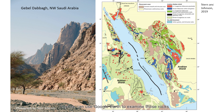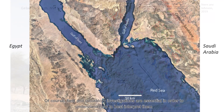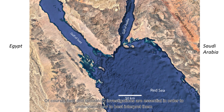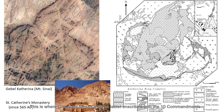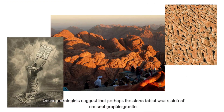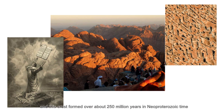Anyone can use Google Earth to examine these rocks. Of course, field and laboratory investigations are essential in order to understand how to best interpret them. But an excellent example can be seen around Mount Sinai, or Gebel Musa as Muslims call it. This is where God gave Moses a stone tablet inscribed with the Ten Commandments. Some petrologists suggest that perhaps the stone tablet was a slab of unusual graphic granite.